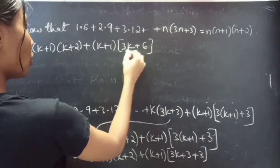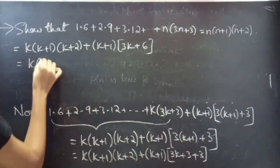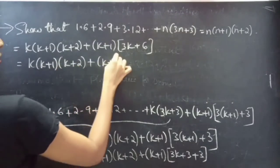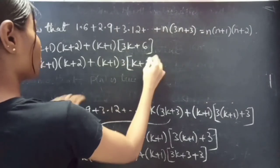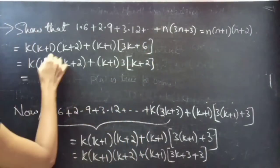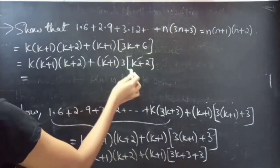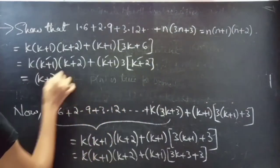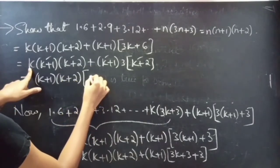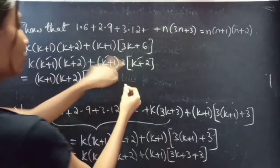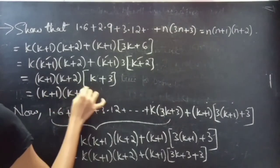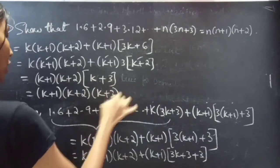Now take 3 common from the last two terms. This gives k into k plus 1 into k plus 2, plus k plus 1 into 3 times k plus 2. Now you can see k plus 1 and k plus 2 appear in both terms. Taking k plus 1 into k plus 2 as a common factor gives k plus 1 into k plus 2 into k plus 3.